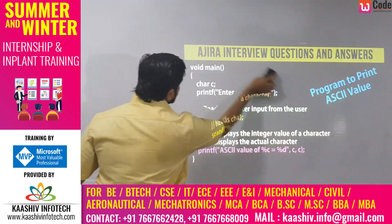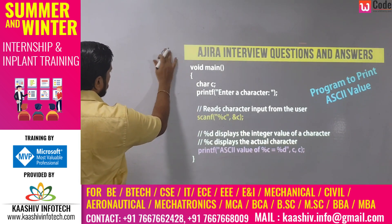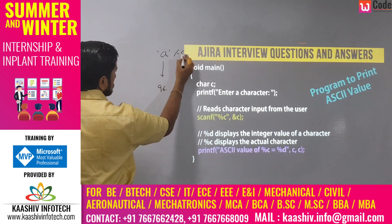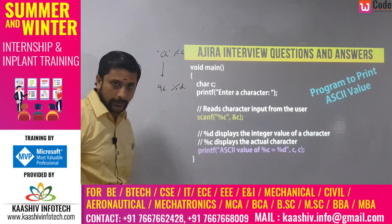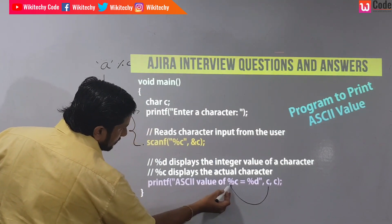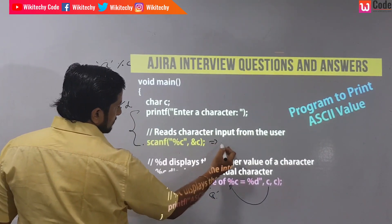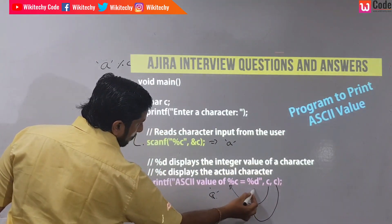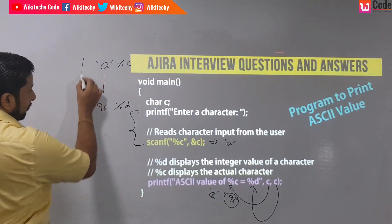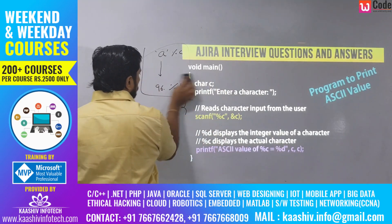The next program is to find the ASCII value of a character. I take a character as input — for example, 'a'. I print it using %c which gives the character 'a', and using %d which gives the ASCII value 96. That's the entire program. They may ask this in different ways, but this is the base program you need to know.